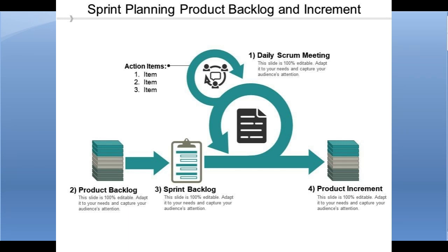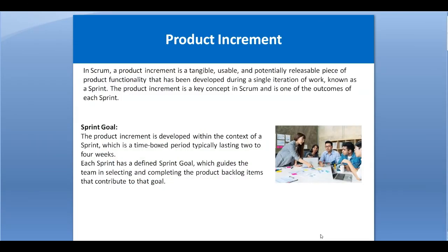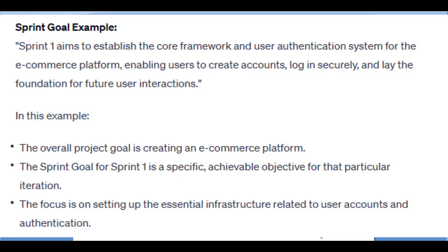Once all sprints are completed, the whole product will be completed as well. This is the concept of product increment. The product increment is developed within the context of the sprint. Each sprint has a sprint goal — the target we want to achieve. For example, one sprint goal might be a working login functionality, another a working product catalog, and another a working payment module.